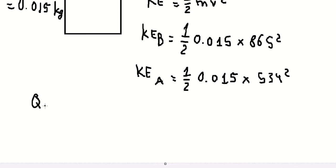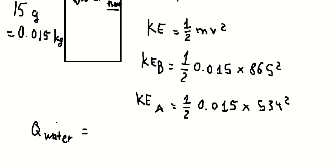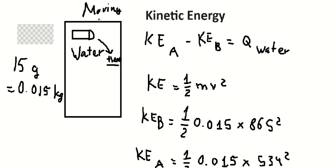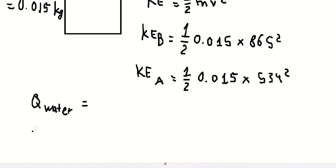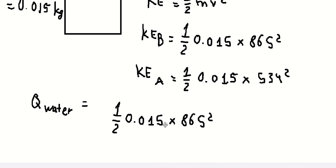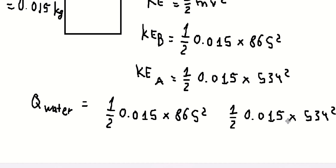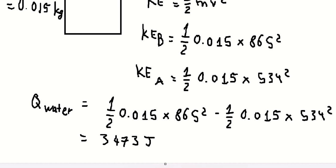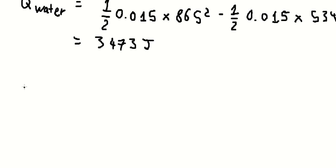So we have Q for the water, which is the energy transformed from kinetic energy to heat. We have this number minus this number, minus the kinetic energy for the water. We get 3,473 joules. After we have this, we can use the formula.